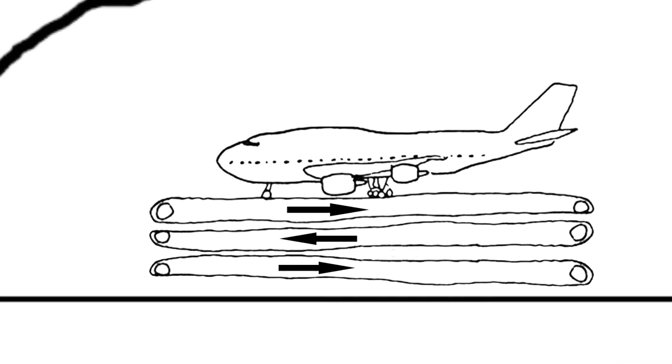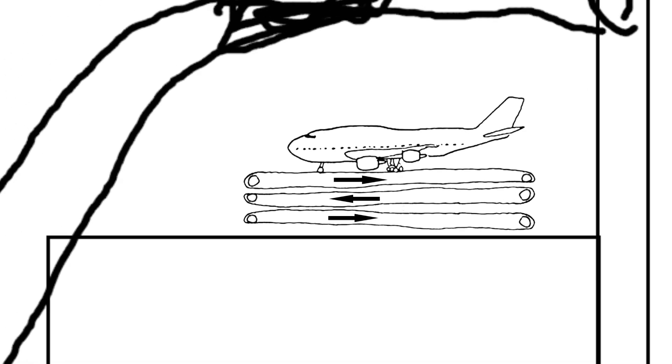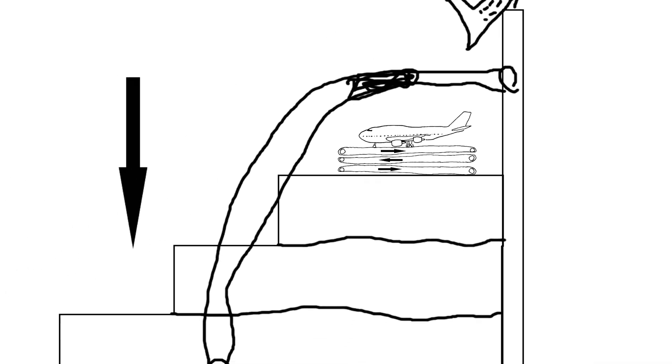Now let's suppose we put the plane and the treadmills on a stair master. The stairs on the stair master are of course going down.